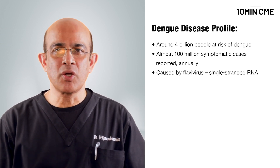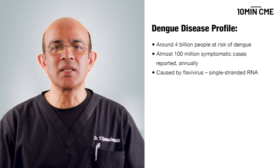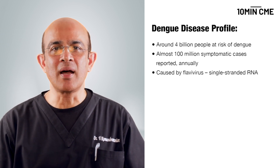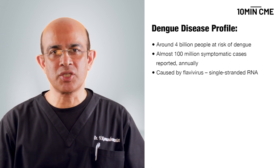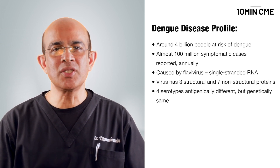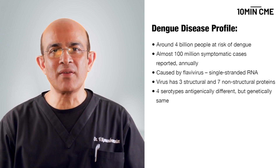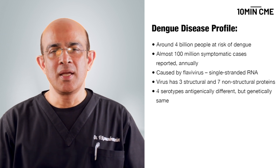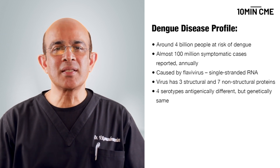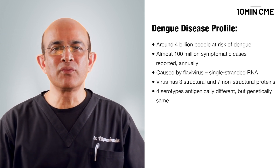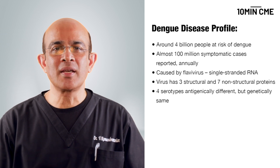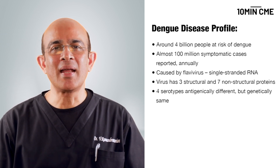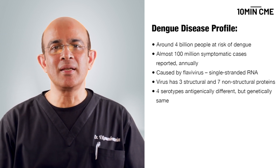This infection is caused by a flavivirus, which is a single-stranded RNA virus that has both structural and non-structural proteins — 3 structural and 7 non-structural proteins. The dengue virus is also present in 4 serotypes, which are genetically the same but antigenically distinct.